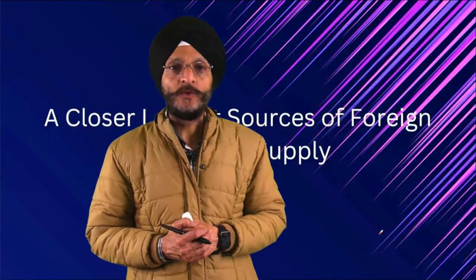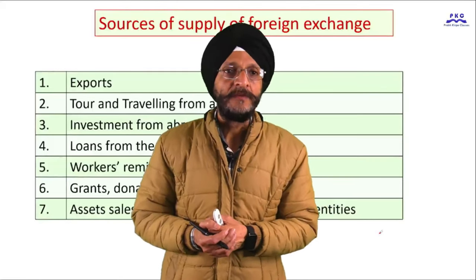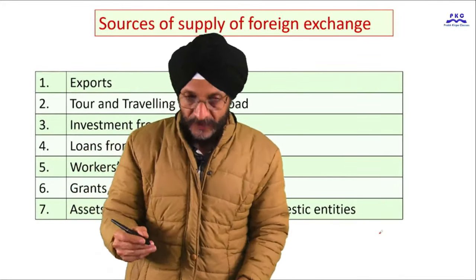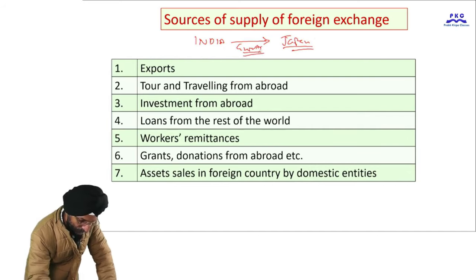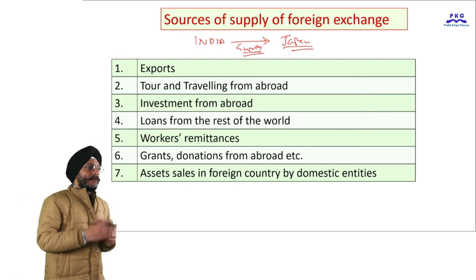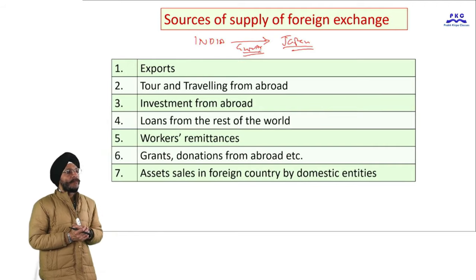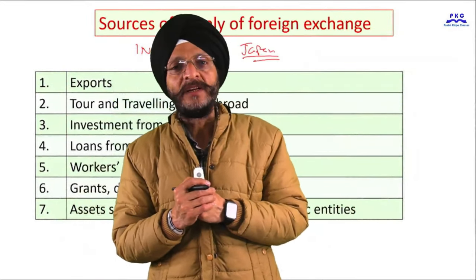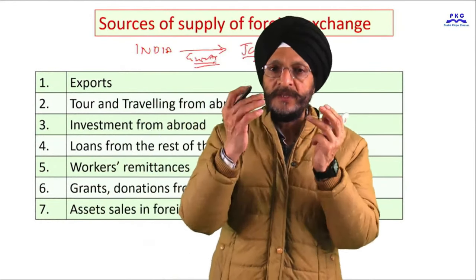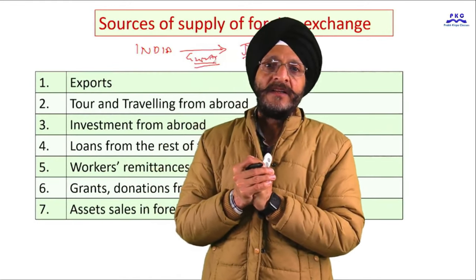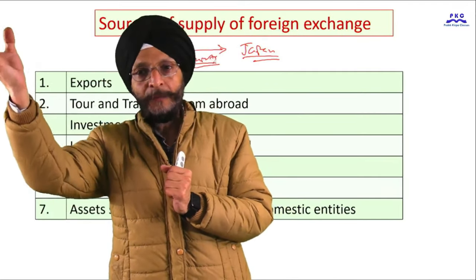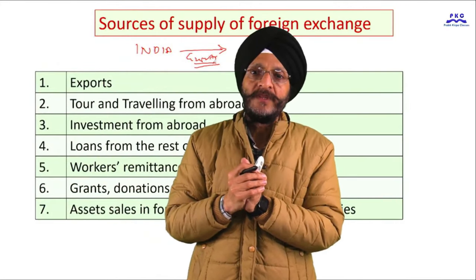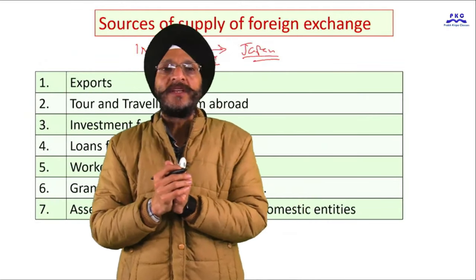The next topic is a closer look at sources of foreign exchange supply. The first source is exports. When we export goods — say from India to Japan — and the exporter agrees to receive payment in the importing country's currency, it results in an inflow of foreign exchange into the home country.